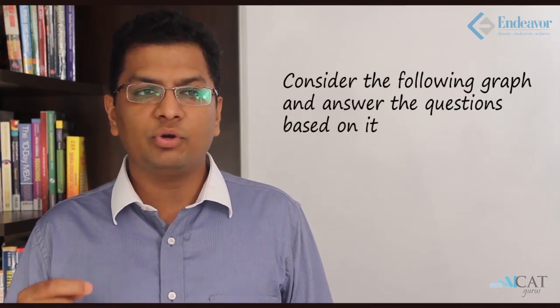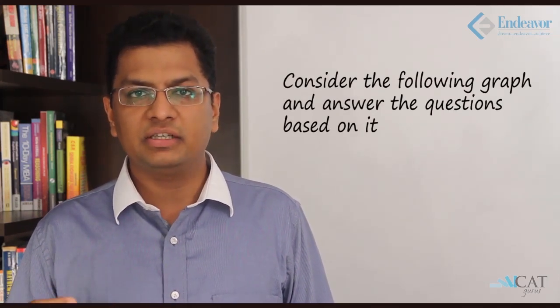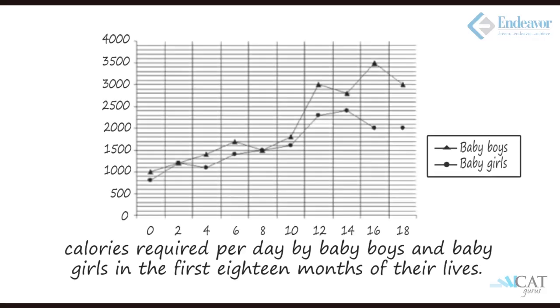Hello and welcome to a session of data interpretation. In this session we shall look at examples of line graphs. Let's have a look at the graph now. Consider the following graph and answer the question based on it. On the x-axis it is 0 to 4, 8, 6, which is the months, and on the y-axis it is calories.